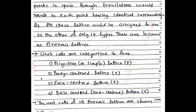We have the primitive or simple lattice, the body-centered lattice, the face-centered lattice, and the base-centered lattice. The primitive is P, body-centered is I, face-centered is F, and base-centered is C. In these 4 unit cell types combined with the 7 crystal systems, we get the 14 Bravais lattices.